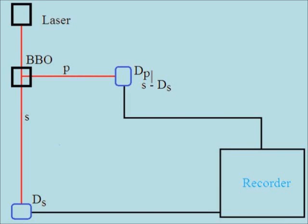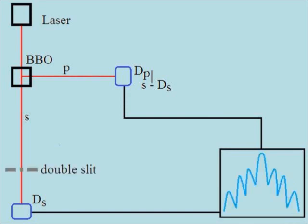Detector DS provides both the position and polarization of the S photons, while detector DP provides the polarization of the P photons. This information is recorded by a recording device. The line labeled S-DS marks the point along the P photon path equal in distance to that traveled by the S photon to DS. Note that DP is before S-DS, meaning P photons are detected before the S photons. Placing a double slit in the path of the S photon produces the interference pattern of the classical double-slit experiment.